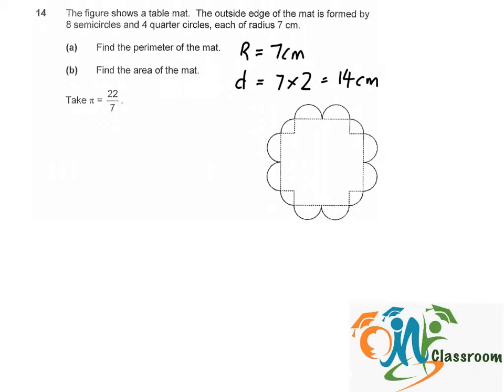Okay, so part A, we need to find the perimeter of the mat. So for perimeter, it will be the length of the outline indicated by my red pointer here.